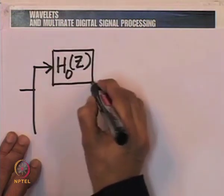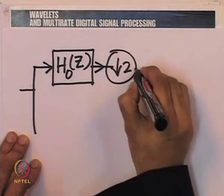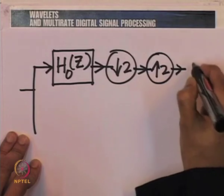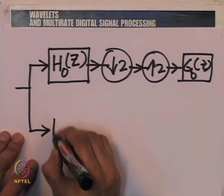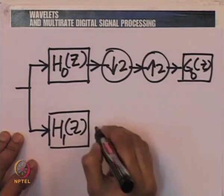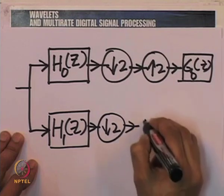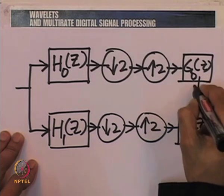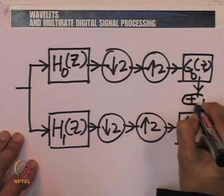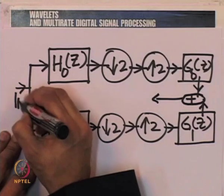So let us consider a two-band filter bank. What we have is a two-band filter bank where the low pass filters are H_0(z) and G_0(z) on the analysis and synthesis sides respectively, and the high pass filters are H_1(z) and G_1(z), again on the analysis and synthesis sides.